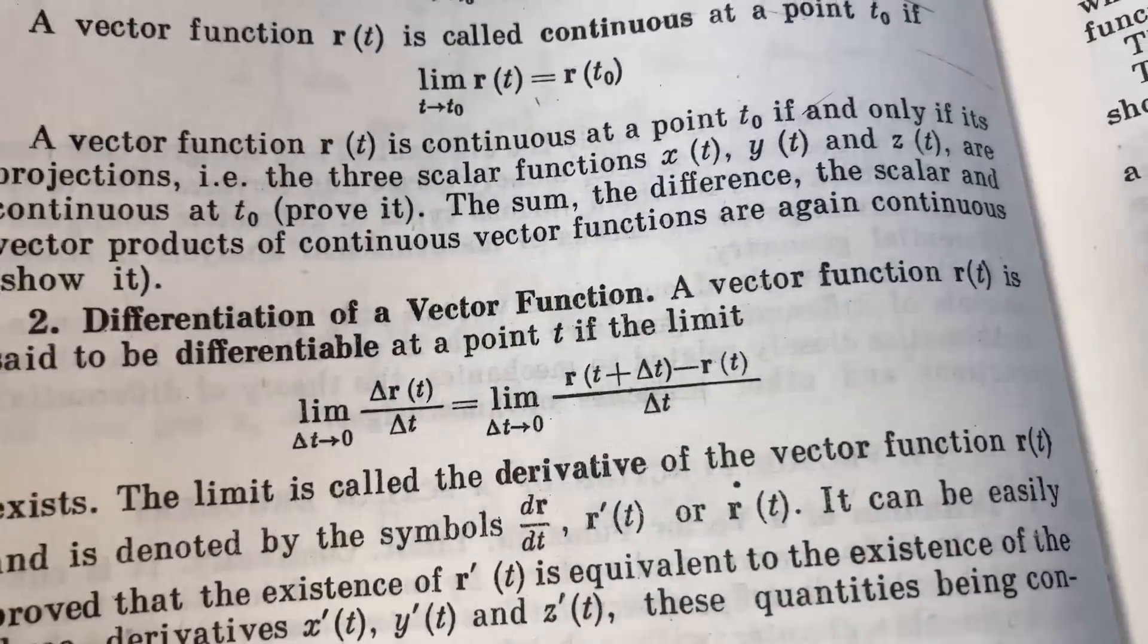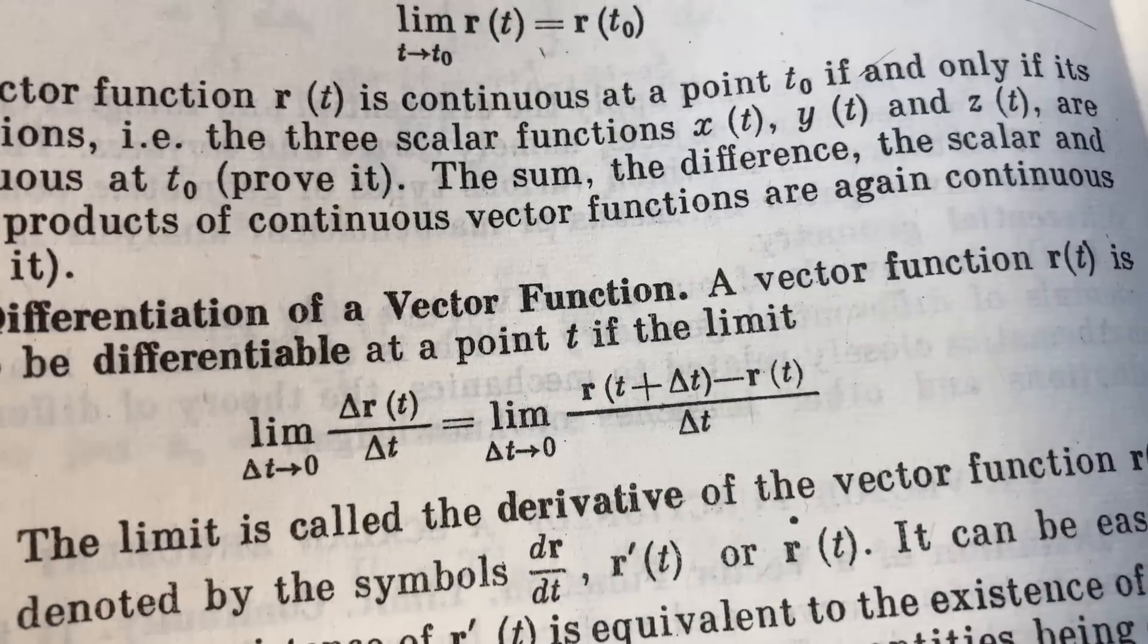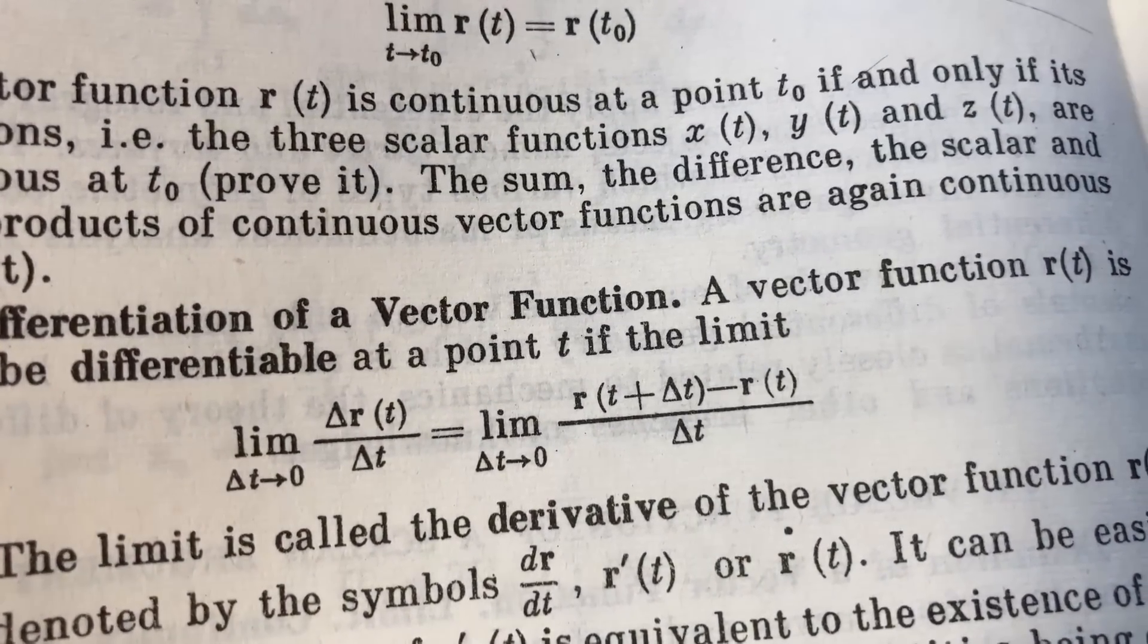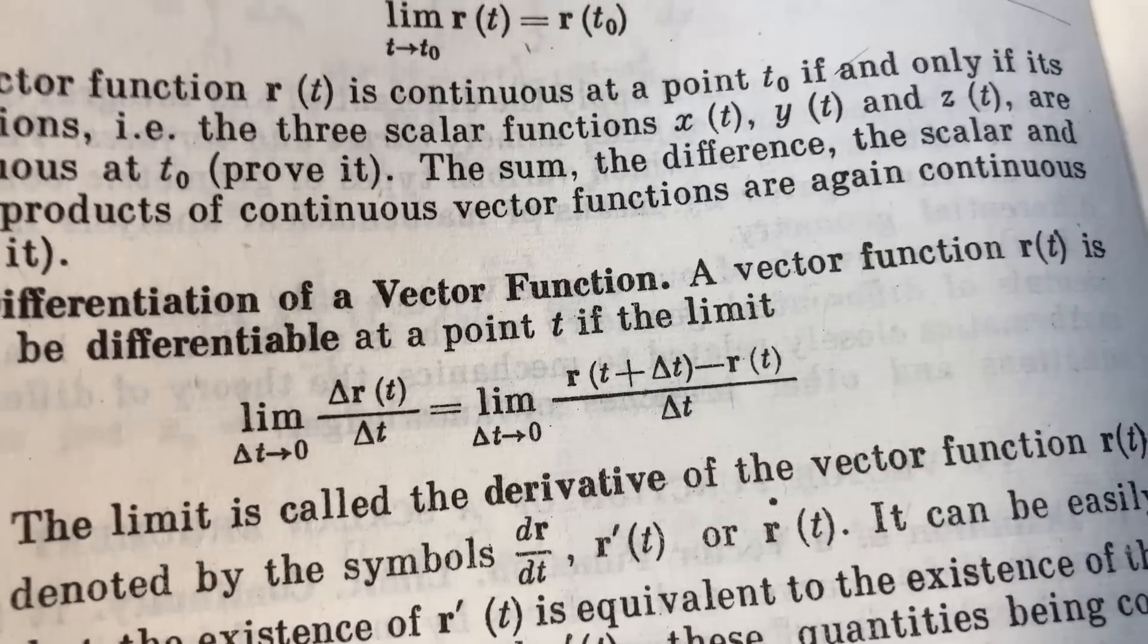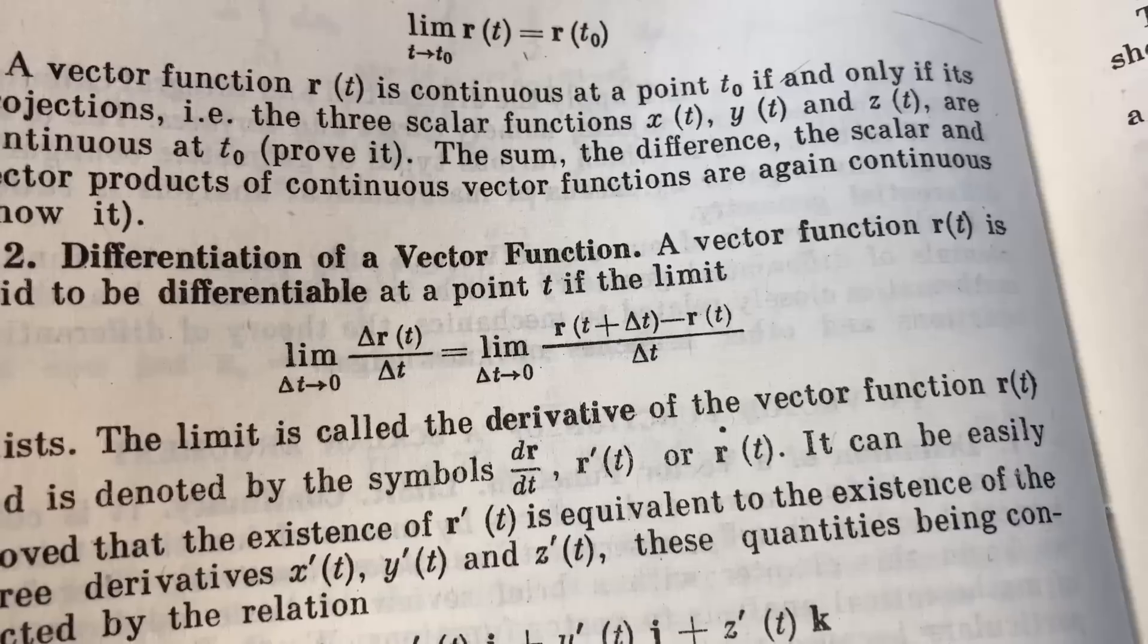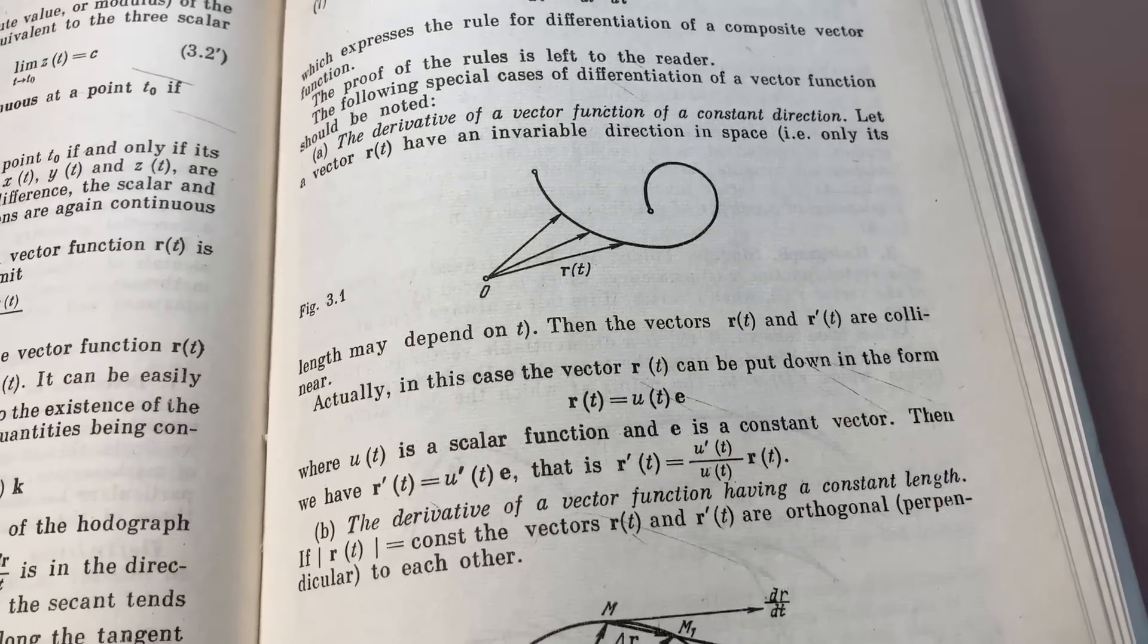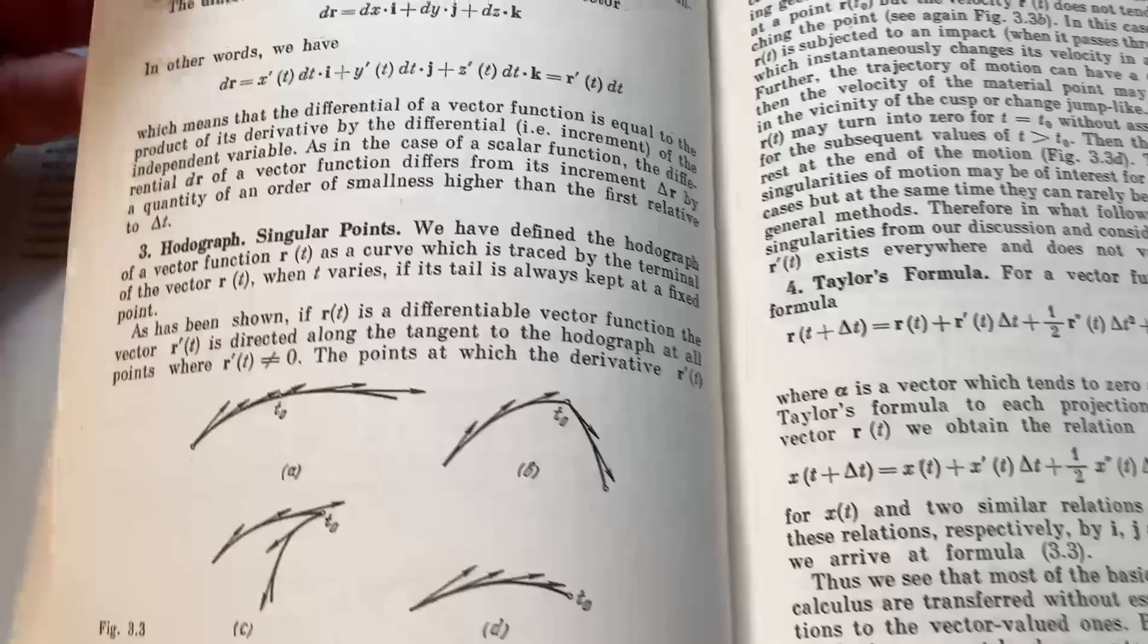Oftentimes, you have the limit as h approaches 0 of f(x+h) minus f(x) all over h. You can replace h with delta t and r with f, and you pretty much have exactly the same thing. A lot of the mathematics is very accessible to a person who has some knowledge of calculus, and a lot of it will be review, which make it a really fun book to read if you already know some calculus.